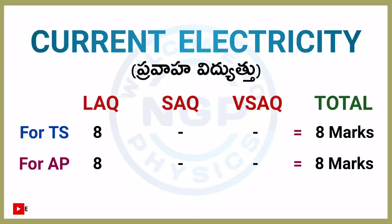Next chapter: Current Electricity. For both AP and TS students, one LQ — one 8-marks question. Chapter weightage is 8 marks.